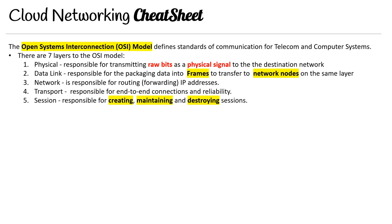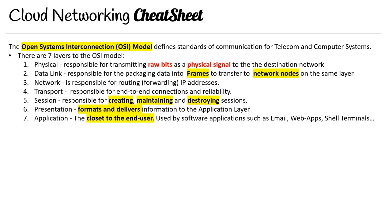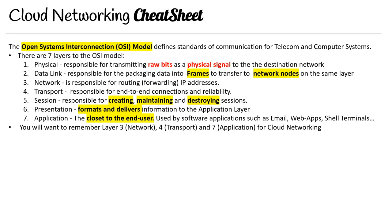The session layer is responsible for creating, maintaining and destroying sessions. The presentation layer is for formatting and delivering information to the application layer. Then you have the application layer itself, which is the closest to the end user — used by software applications such as emails, web apps, and shell terminals. The layers I want you to remember are layer three, layer four, and layer seven: network, transport, and application — for cloud networking and specifically AWS.